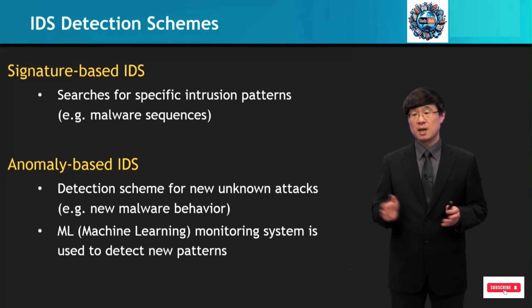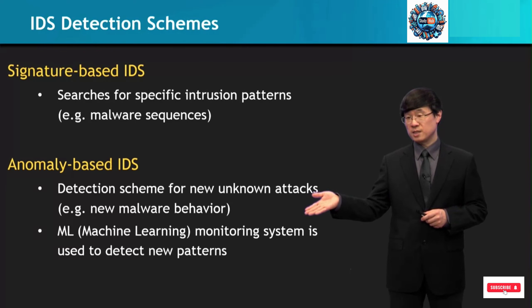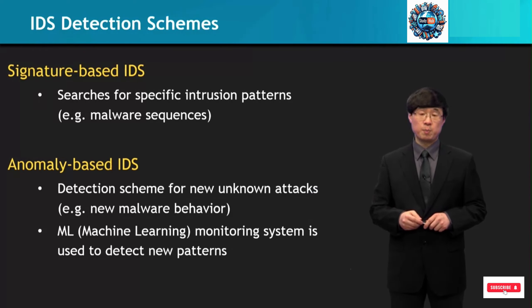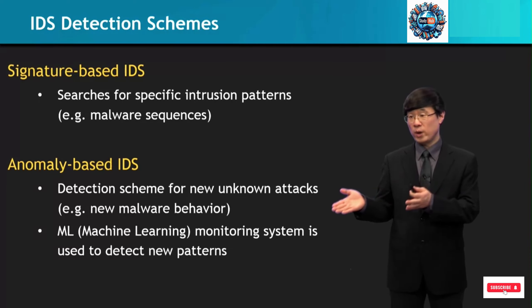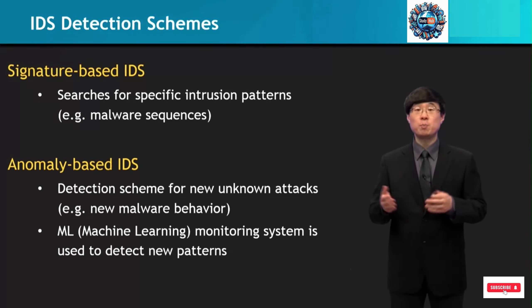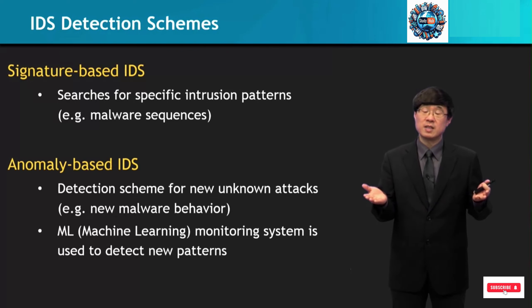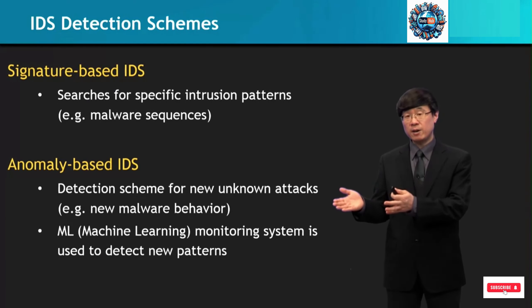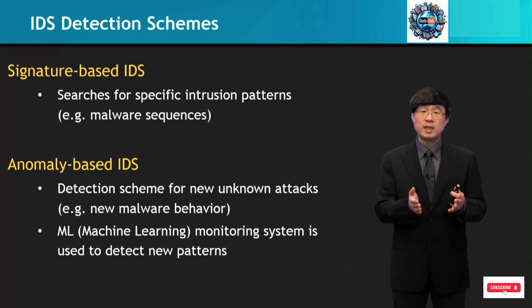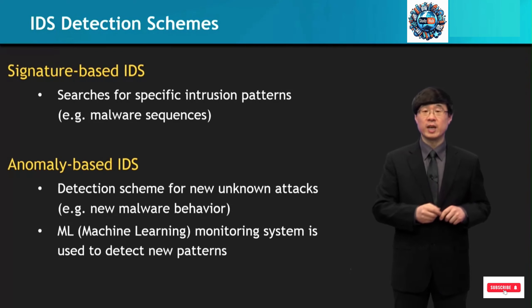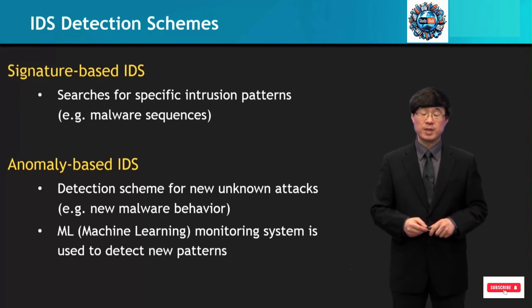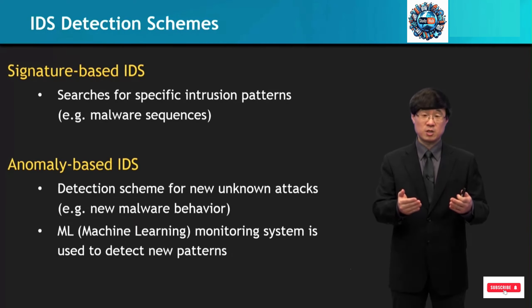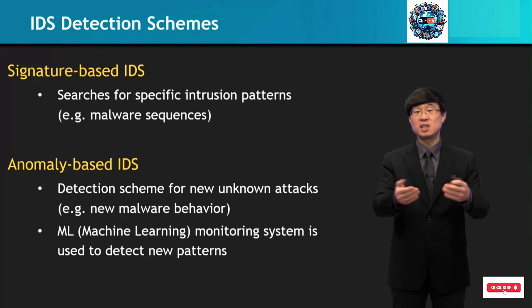There's also anomaly-based IDS, where the detection scheme for new unknown attacks are dealt with, such as new malware behavior. For this, we need a machine learning monitoring system, which is used to detect new patterns — which means that we need artificial intelligence. We monitor to detect new patterns that have no previous records, and based upon typical patterns we do know, we need to predict if a new pattern is an attack, and that requires machine learning technology.